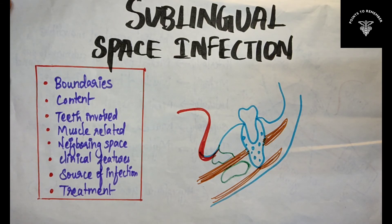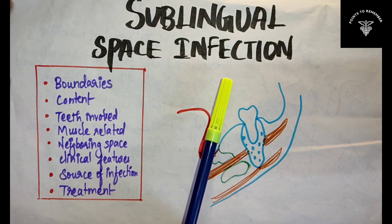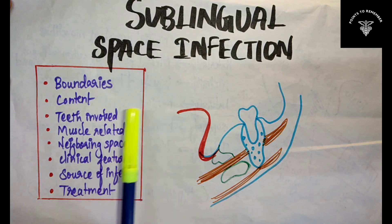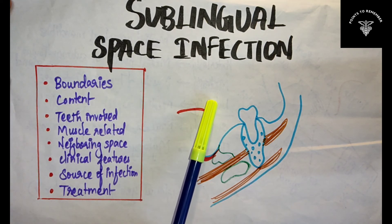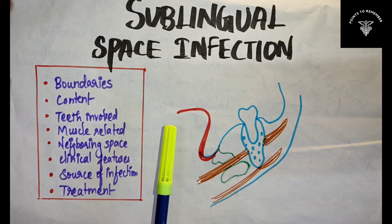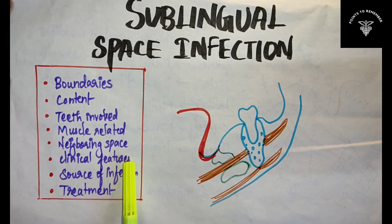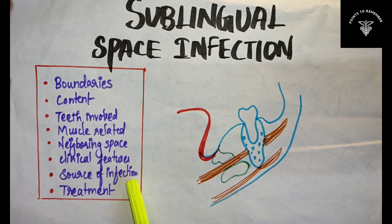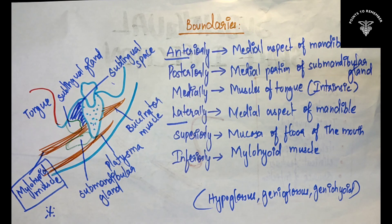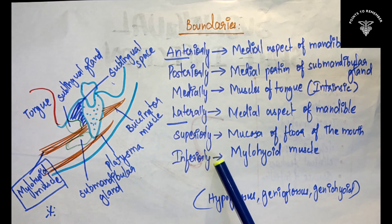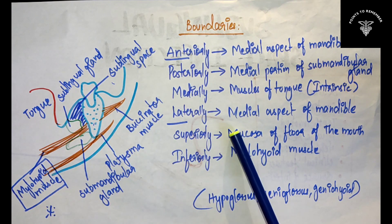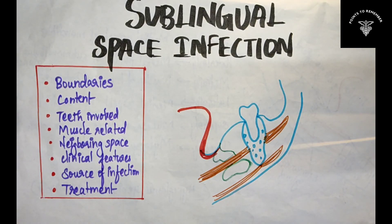Let's quickly recall what we have covered: boundaries of the sublingual space, contents of sublingual space, teeth involved, muscle related, neighboring spaces, clinical features, source of infection, and treatment of sublingual space infection. These are the headings you should write in detail. Drawing the diagram and studying the boundaries will make it simple. That's all about sublingual space infection.